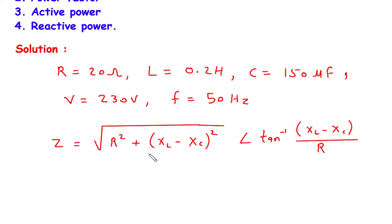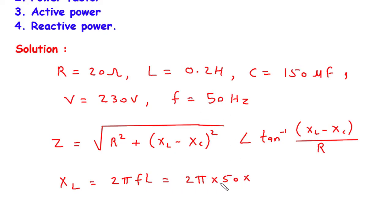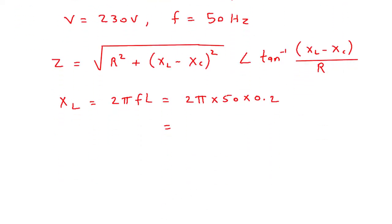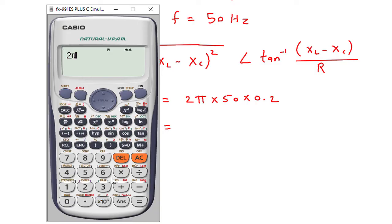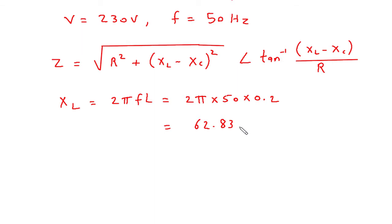We have the value of R, but we don't have the values of XL and XC. So first we will find XL — that is inductive reactance. The formula is 2πFL. Substituting values: 2π multiplied by 50 Hz multiplied by L, which is 0.2 Henry. So XL is equal to 62.83 Ohm.